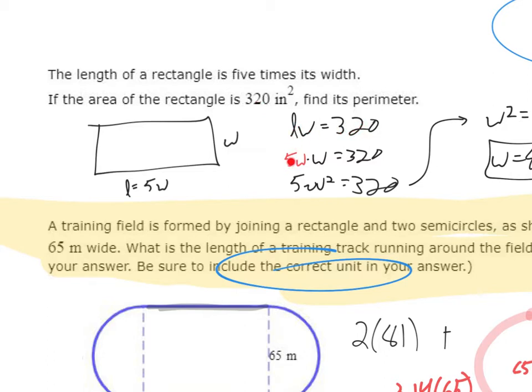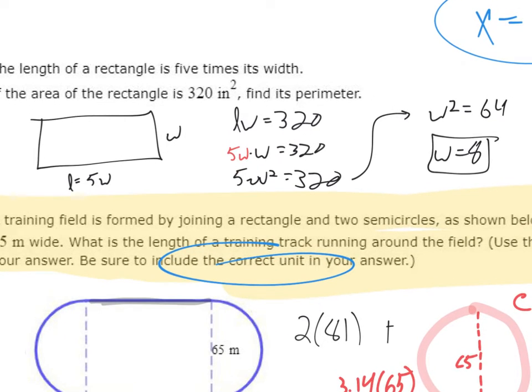And if I know the length was 5w, I can plug that in. So instead of length, I plugged in 5w, so now we simplify. 5w times w is 5w squared. Divide out the 5, we get w equals 8.